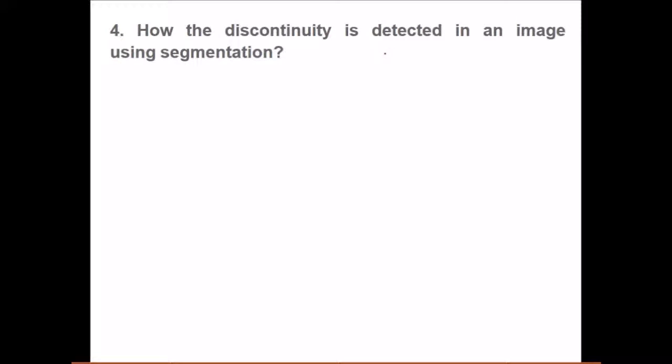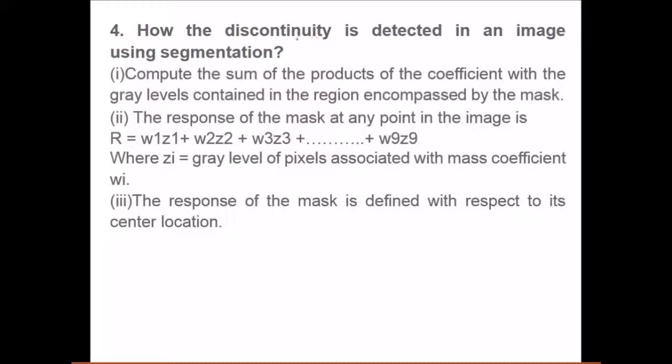How is discontinuity detected in an image using segmentation? Compute the sum of the products of the coefficients with the gray level contained in a region encompassed by the mask. We will use a mask or kernel, and the response of the mask at any point in the image is like this. This is the image, this is a 3 by 3 mask. You apply it, and you keep on applying it left to right.